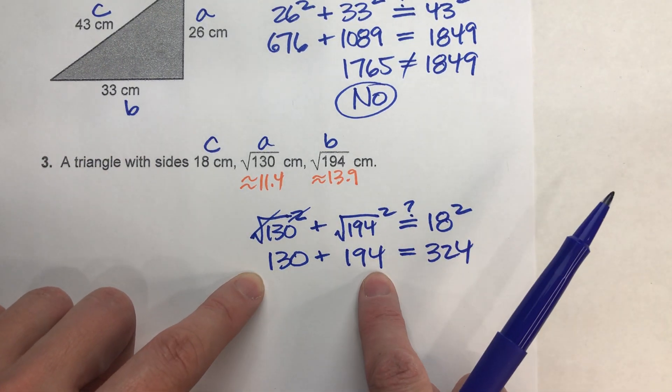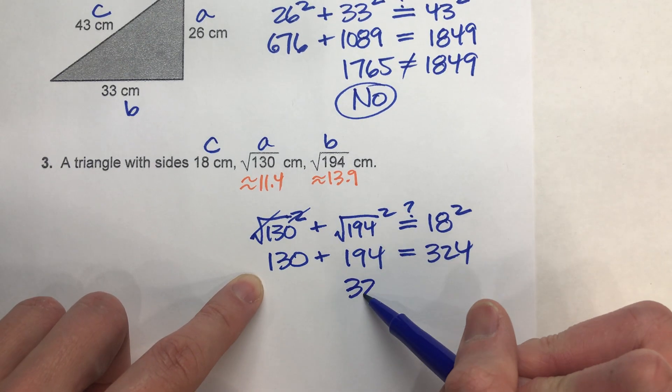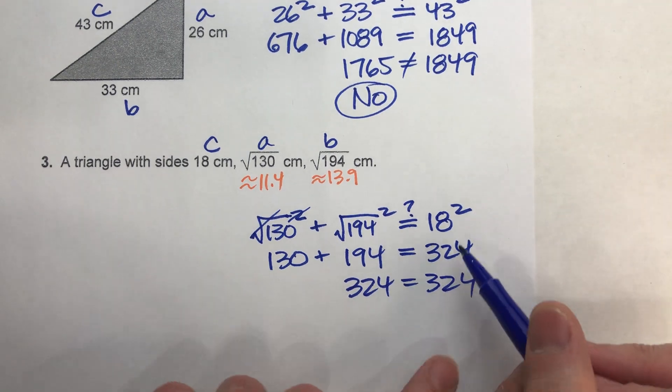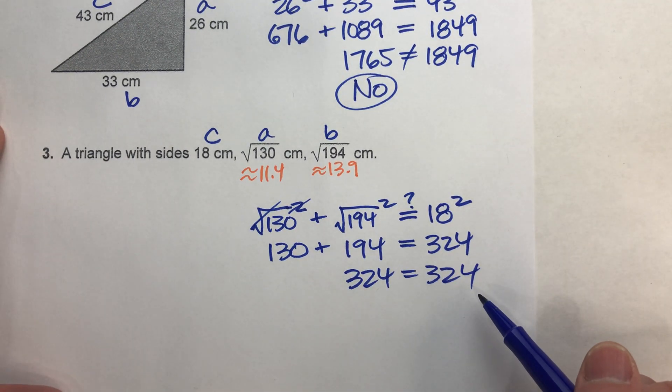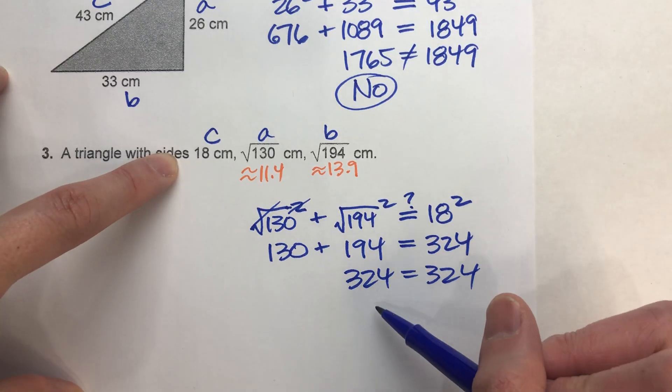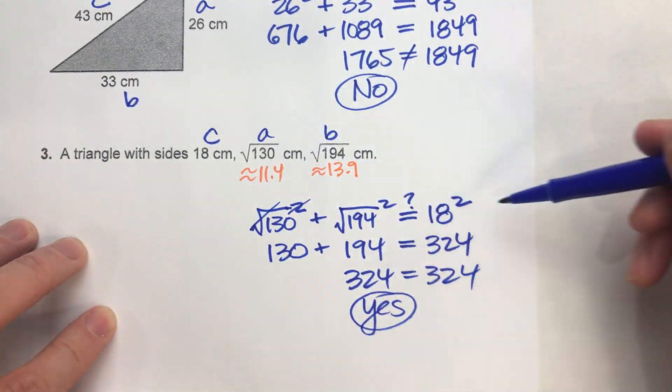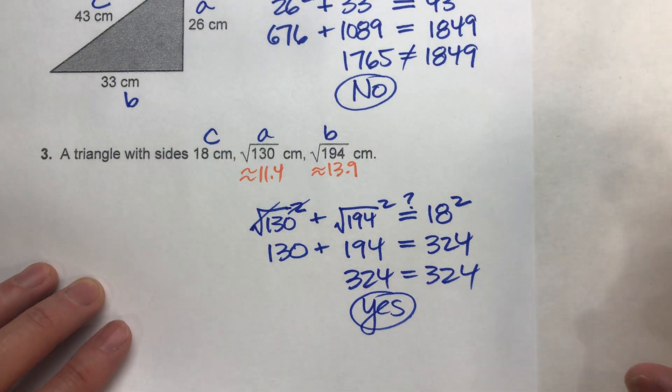Let's find out. If I add 130 to 194, I get 324. And does that equal the other side? Why, yes it does. 324 equals 324. So guess what? Those three sides do form a right triangle because the Pythagorean theorem worked for it.